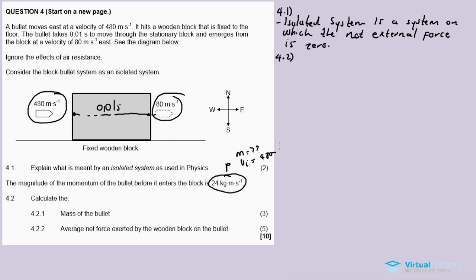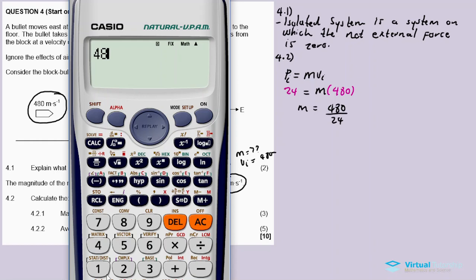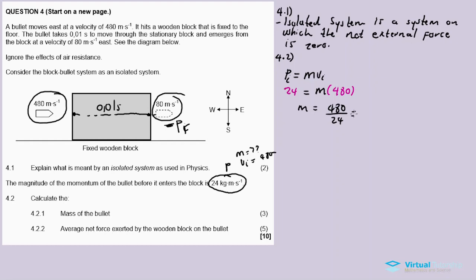So using the momentum formula, this is the initial momentum. The magnitude of the momentum before it enters the block is P initial. So we substitute: 24 equals m times the initial velocity, which is 480. Then I make m the subject of the formula and calculate.